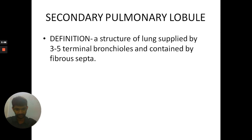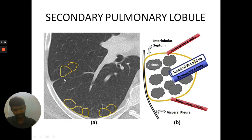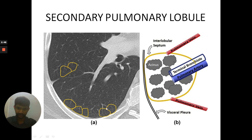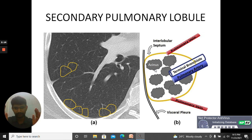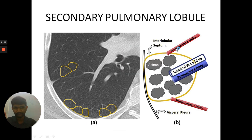Let us see the CT to understand this definition. On the left-hand side you can see the CT, and in the yellow markings are the secondary pulmonary lobules — these are the terminal parts visible at the periphery. The left-hand side is the CT image and the right-hand side is the diagrammatic representation. Each secondary pulmonary lobule is surrounded by fibrous or connective tissue septa, has its own terminal bronchiole, its own pulmonary artery, and its own pulmonary vein. Within the secondary pulmonary lobule there are acini, and within each acinus are primary pulmonary lobules. Multiple primary pulmonary lobules form one acinus, and multiple acini form one secondary pulmonary lobule.